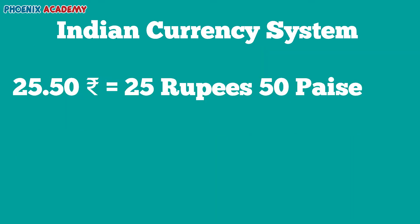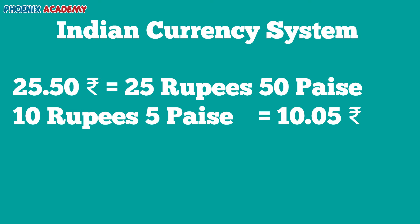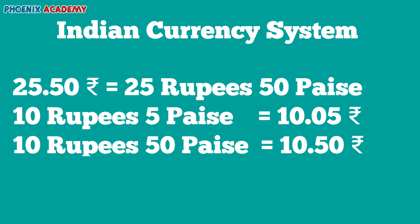To express an amount of money in short form, we put a dot to separate rupees and paisae. The number on the left side of the dot represents rupees and the number on the right side of the dot represents paisae. It's important to note that we always write paisae as a 2-digit number. For example, 10 rupees 5 paisae is written as ₹10.05, and 10 rupees 50 paisae is written as ₹10.50.